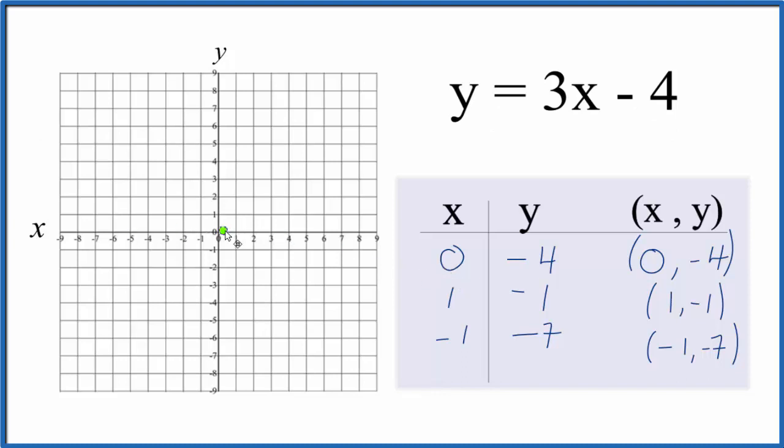So we have x is 0 right here, and y is a negative 4. That's our first point. We have x is 1, y is negative 1. So we go 1, negative 1.